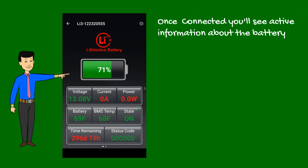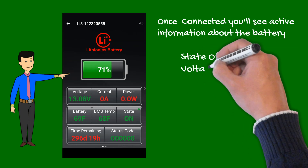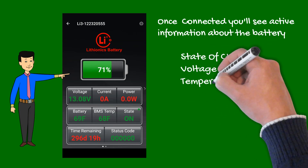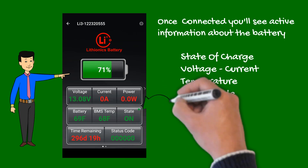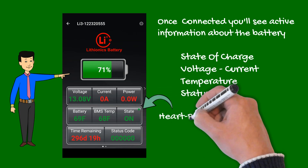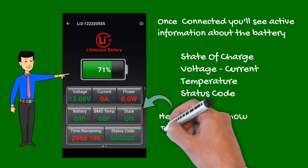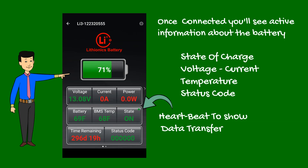The status screen displays state of charge, voltage, current, temperature, and status code. Note there is a small blinking green dot in the battery state column. This is the heartbeat signal indicating data is being transmitted from the battery.